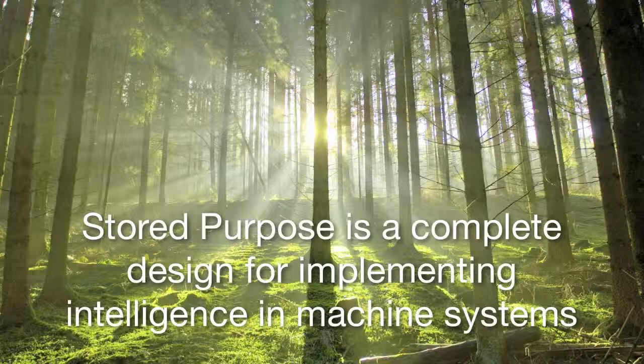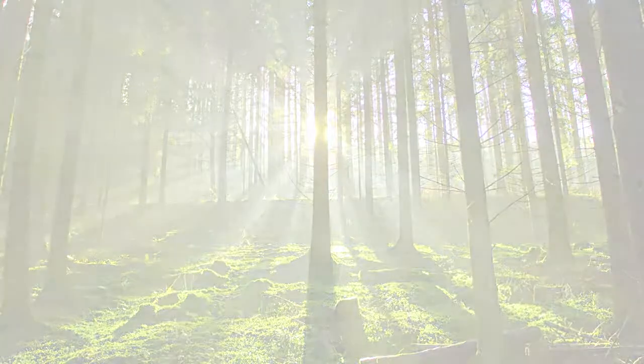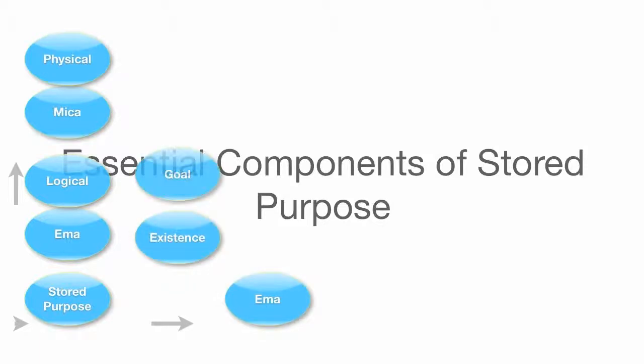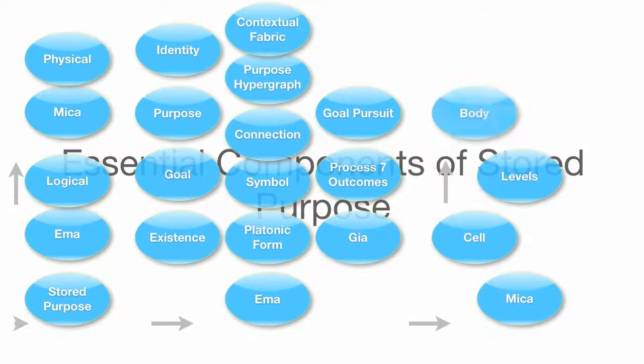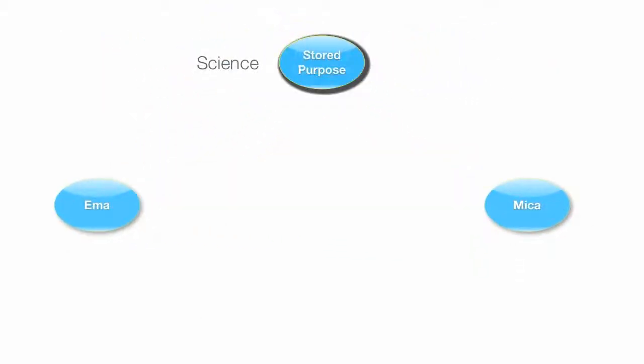Some of the features, attributes, processes, and information stores we may talk about have comparable features in nature. So today we'll talk about those essential components of Stored Purpose, including the two big architectures: EMA and its existence, platonic forms, and general intelligence algorithm, and MICA, which is the construction model that covers cells and instruments and other mecha technology.